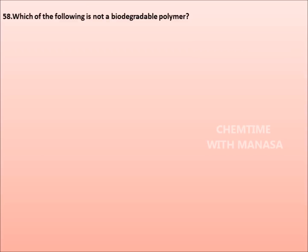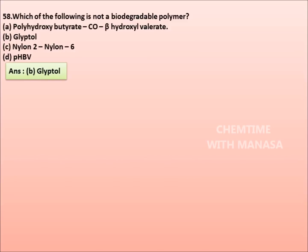Question number 58. Which of the following is not a biodegradable polymer? Polyhydroxybutyrate-co-beta-hydroxyvalerate, Glyptal, Nylon 2-Nylon 6, PHBV. The correct answer is option B: Glyptal.